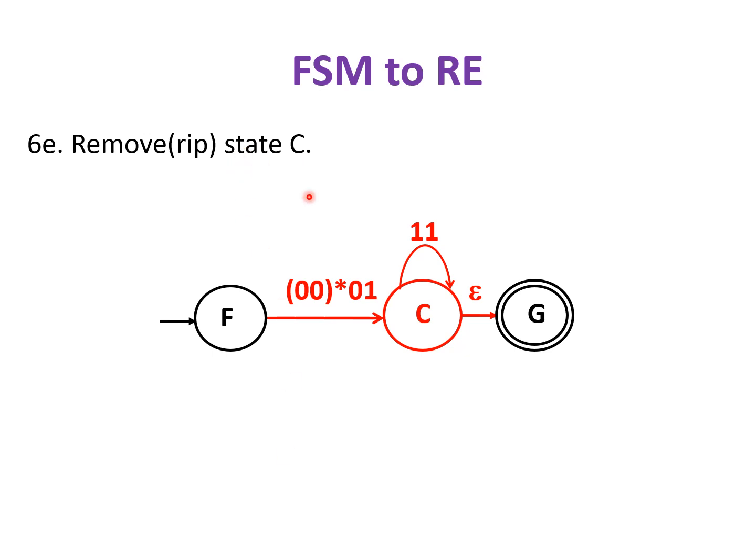On ripping state C, C in between F and G having a direct transition, we get from F to G: (00)*01 followed by a self loop of 11, that is (11)* epsilon, reaching G. On eliminating C, we get this transition diagram.